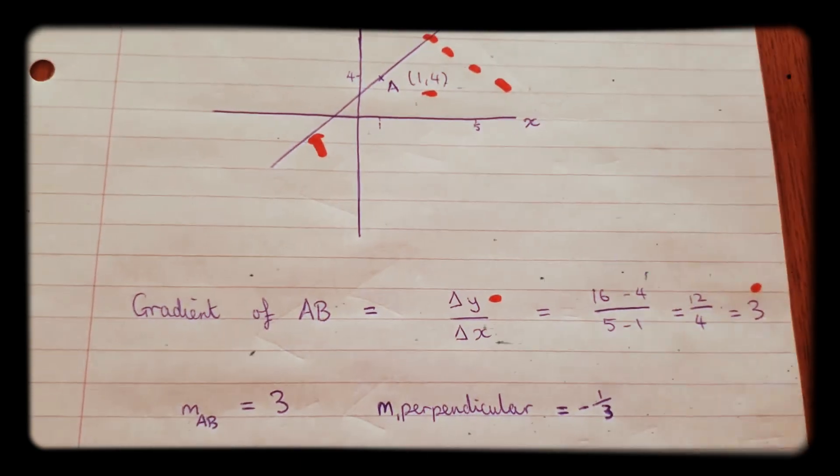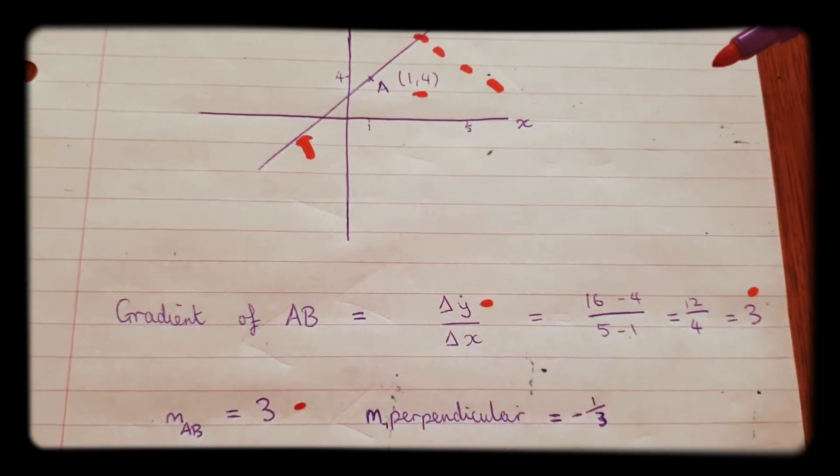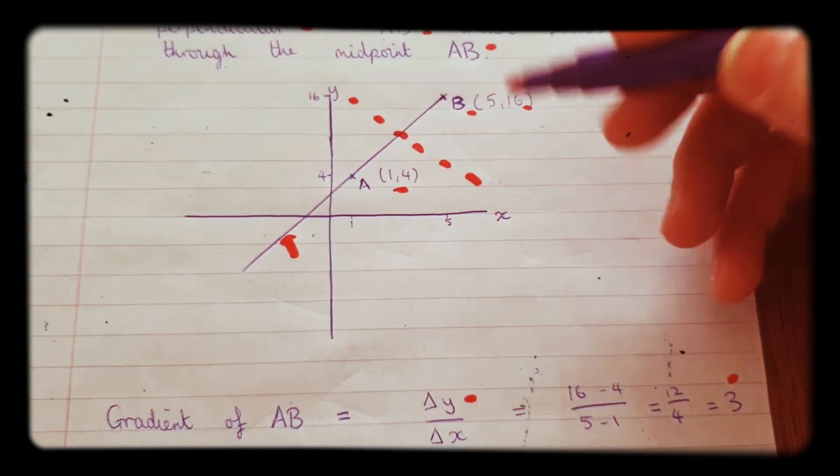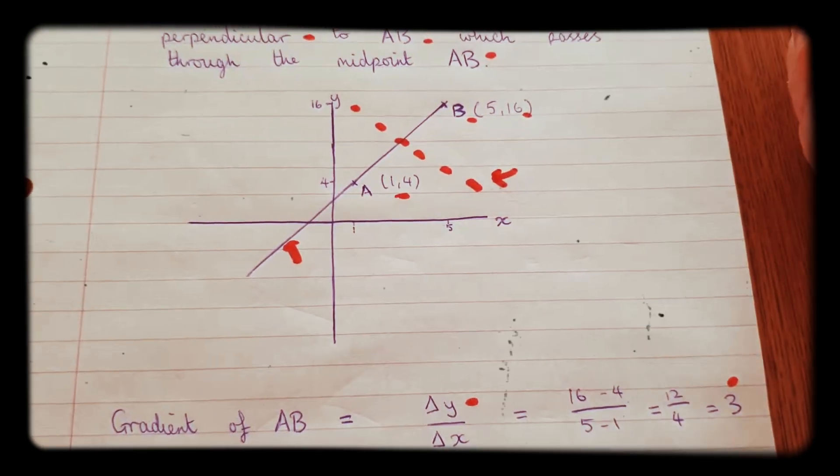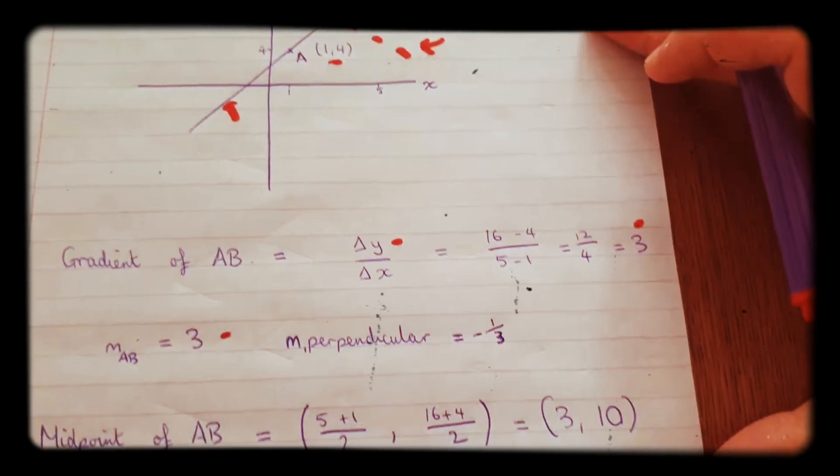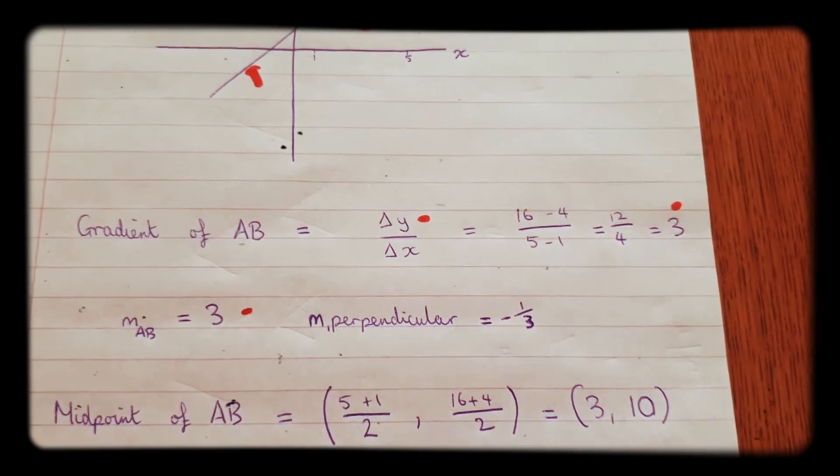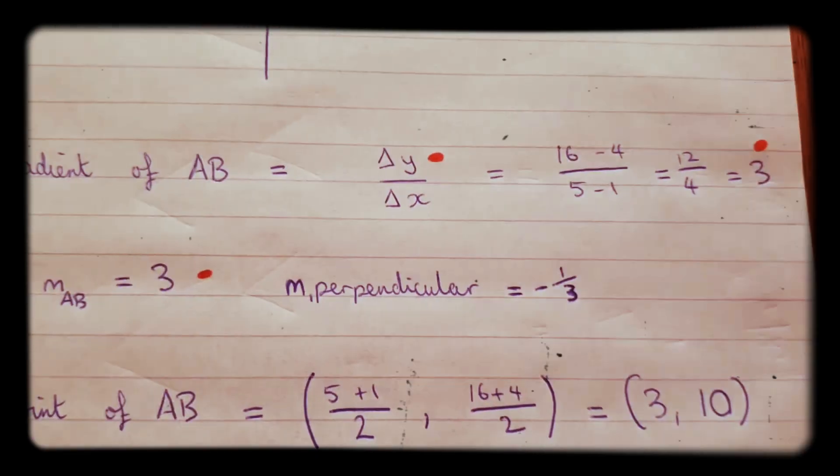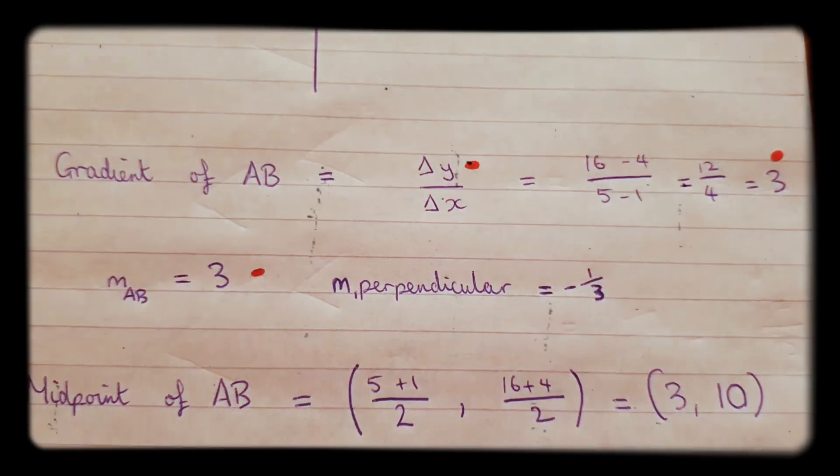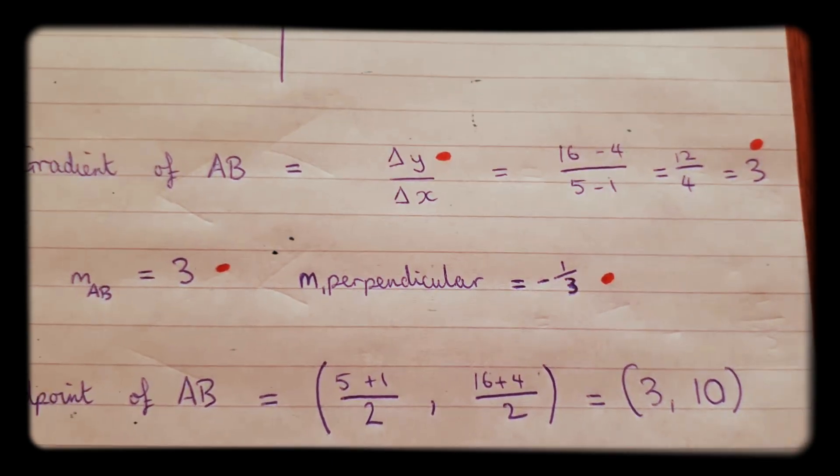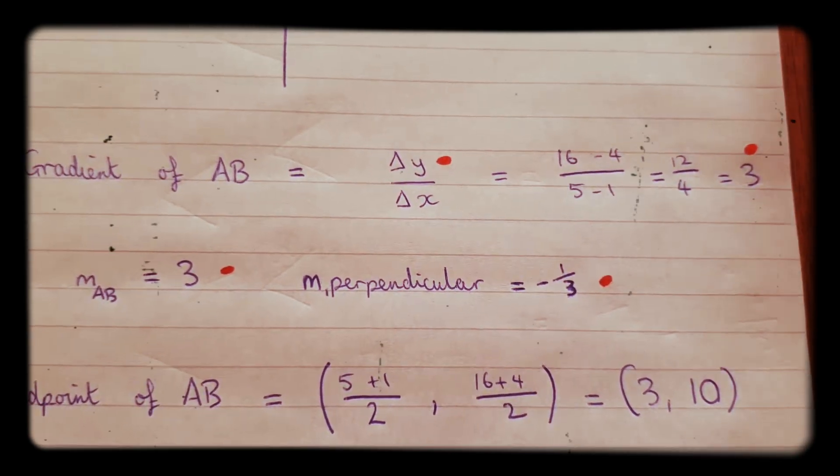The next thing we do is, now we know the gradient of that line is 3, what must be the gradient of this line? Well, the gradient of the perpendicular line is going to be the negative reciprocal of the other line. So if that line is 3 as a gradient, this line is going to be minus 1 over 3, because that's the negative reciprocal.